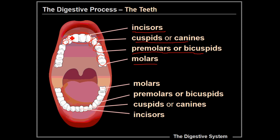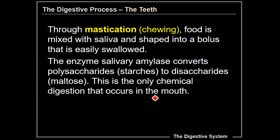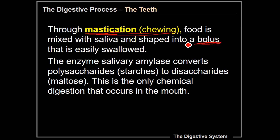The upper jaw teeth are anchored and oriented in your maxilla bone, and the lower jaw teeth are in the mandible. Through mastication, or chewing — and if you remember from the muscular system, the large muscle on your jaw attached to your mandible is called the masseter muscle, named because it helps you masticate your food — food is mixed with saliva and shaped into a bolus. A bolus is a mouthful of food that you are able to swallow, and when it's all ground up and mixed with saliva, it is easily swallowed.